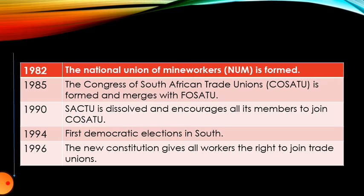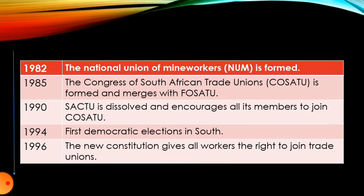In 1990, the South African Council of Trade Unions was dissolved and encouraged all its members to join COSATU. In 1994 we had our first democratic elections in South Africa, and then in 1996 the new constitution passed laws that gave workers the right to join trade unions. And that completes our timeline.